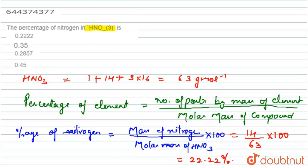And we calculate the percentage of an element in any compound - it is equal to mass of that element divided by total molar mass of the compound into 100.